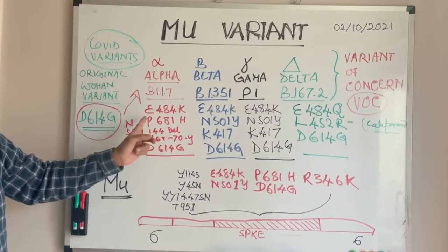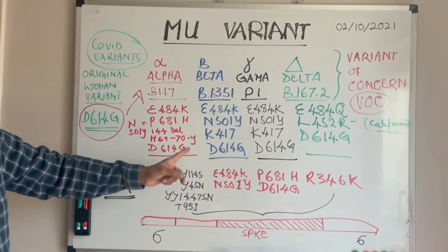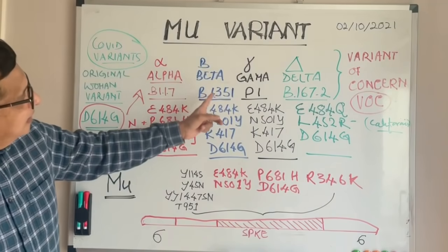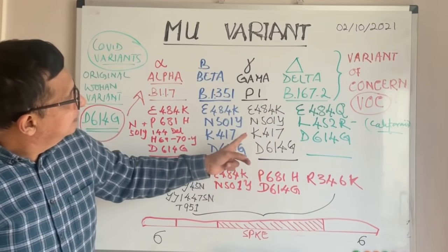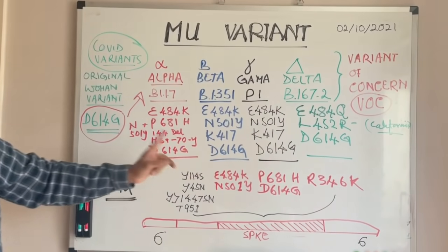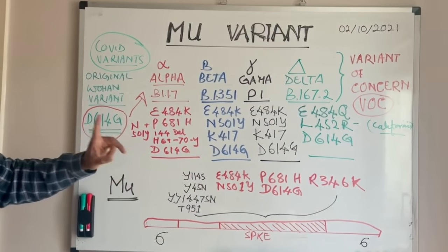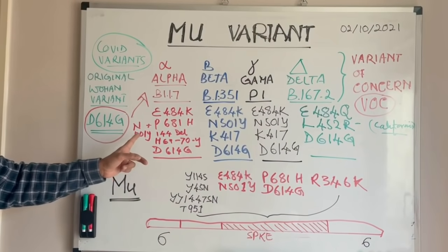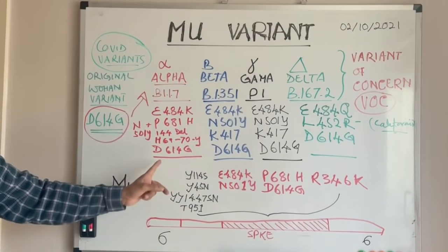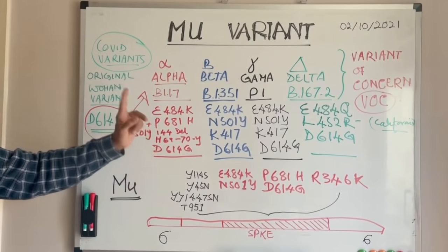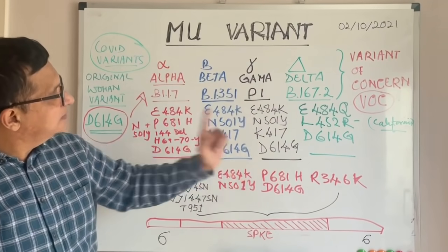At position P681, Alpha carries that mutation. And the N501Y substitution is present in Alpha, Beta, and Gamma as well.